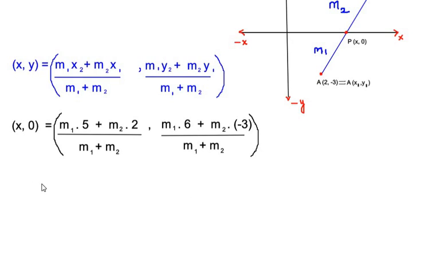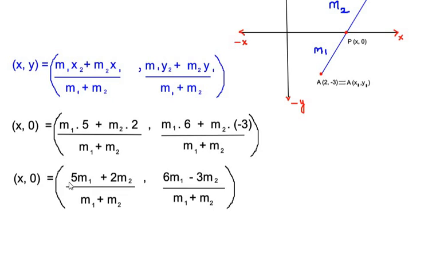We have (x, 0) is equal to (5m₁ + 2m₂)/(m₁ + m₂), (6m₁ - 3m₂)/(m₁ + m₂). m₁ times 6 is 6m₁ and plus with minus gives you minus, m₂ times 3 is 3m₂. The denominators remain the same.